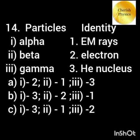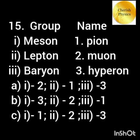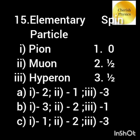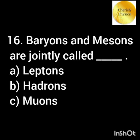Match the particles with their corresponding identity. Match the following with their corresponding group. Match the elementary particles to their spin. Baryons and mesons are jointly called hadrons.